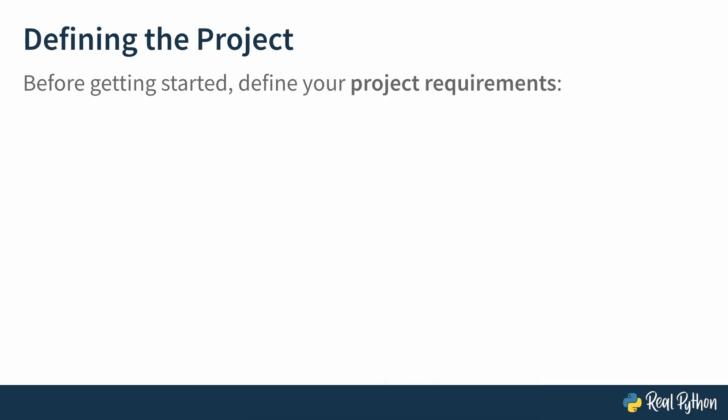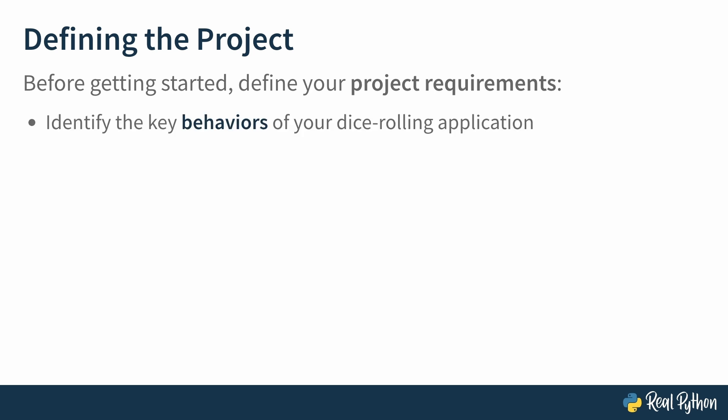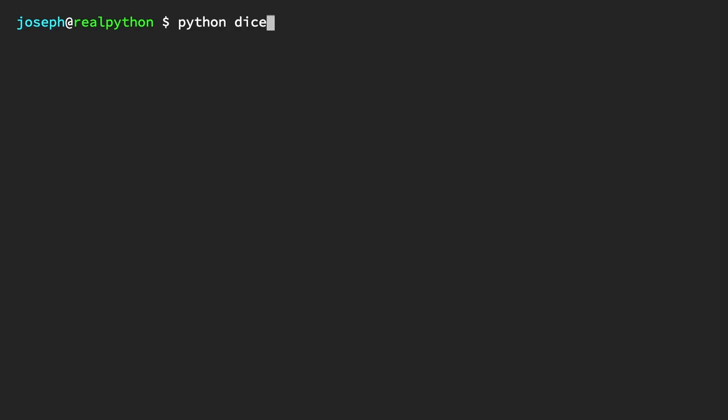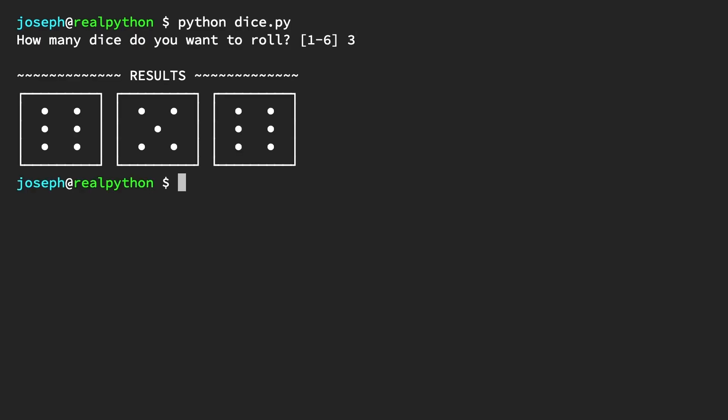Prior to embarking on any new project, you need to define your project's requirements — if not, you're likely to roll snake eyes. You'll start by identifying the key behaviors of your application. Ask yourself: what does this application do? And then you'll determine the implementation strategies you'll use to achieve them. Watch the demo again and see if you can deduce the steps that need to occur to make everything work as seen.